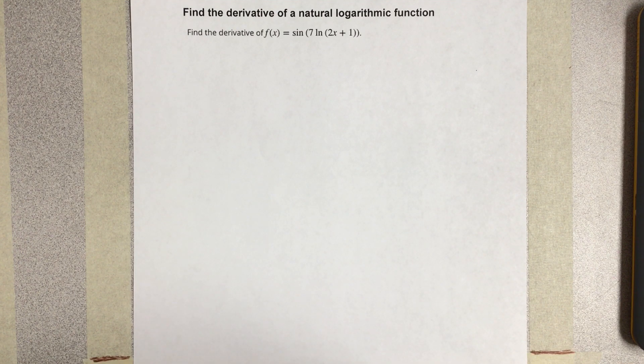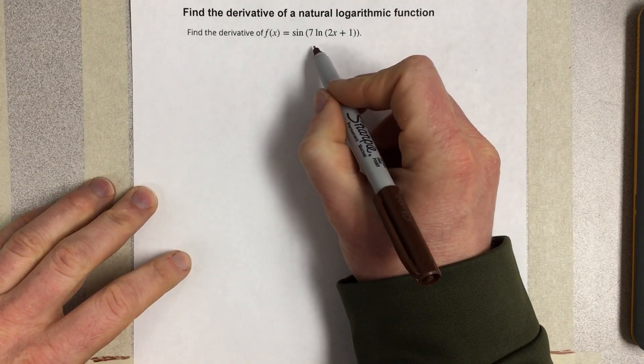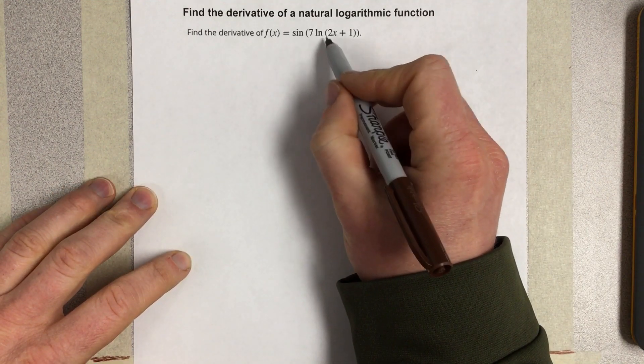So we have a chain rule here. We're going to start, and we actually have a couple of chain rules that we're going to have to do. So we're going to just start with the outside.